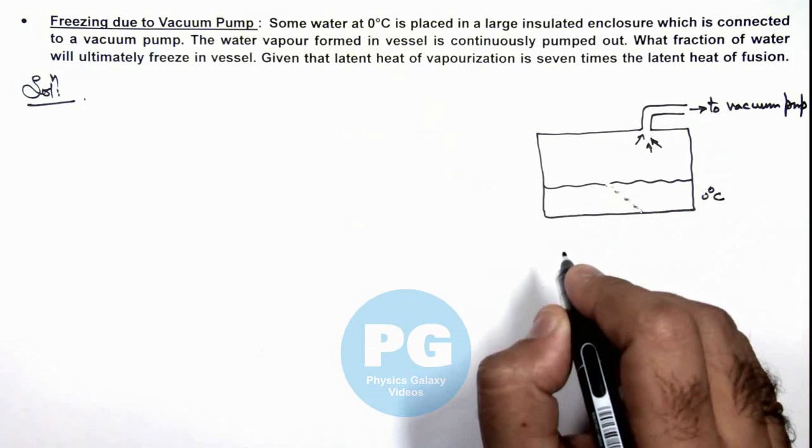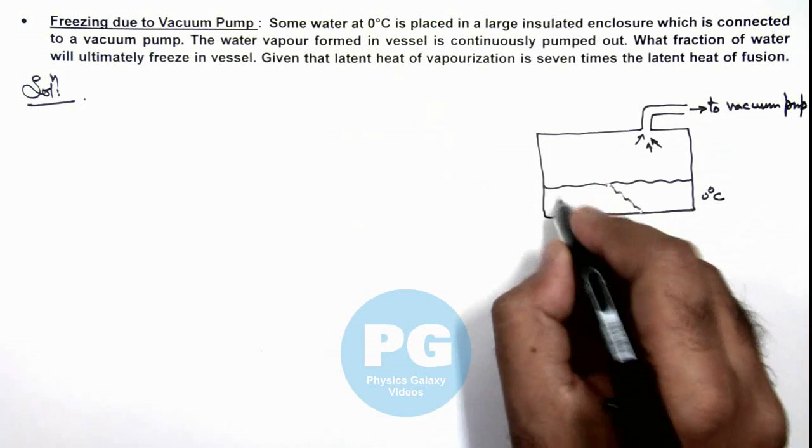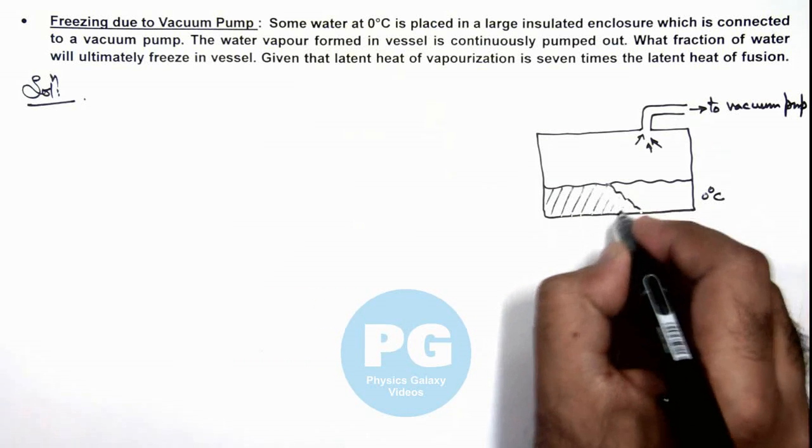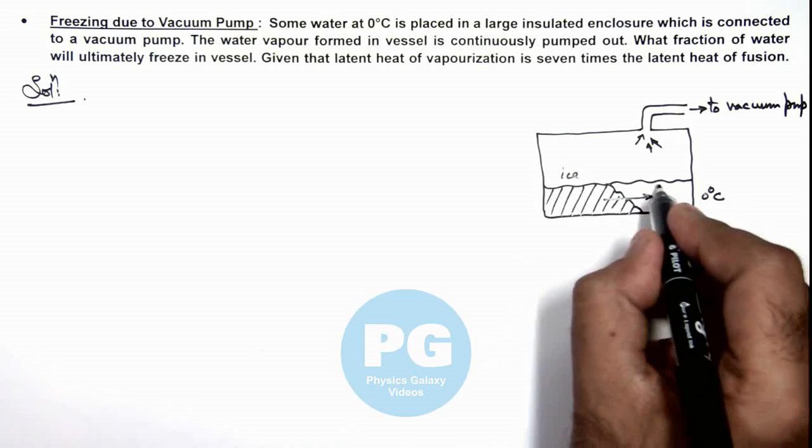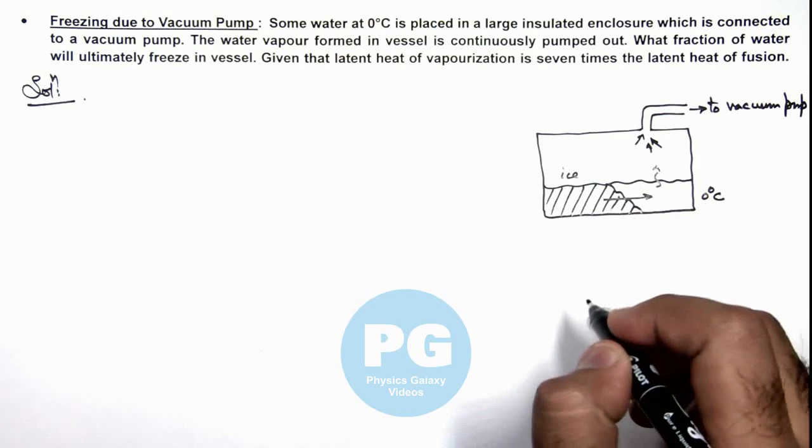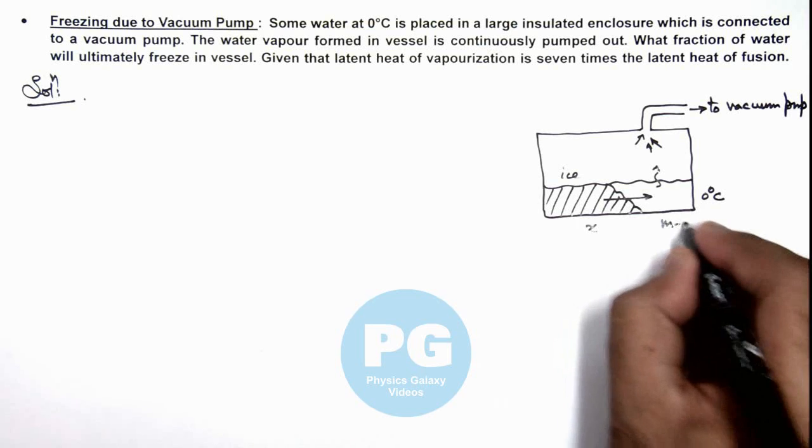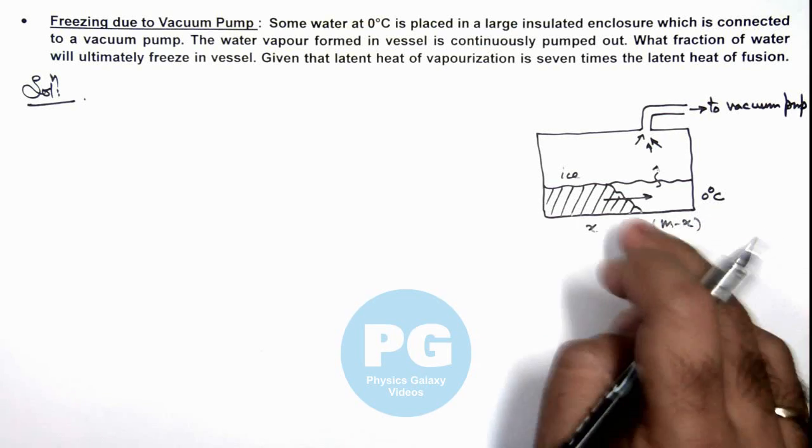So here we can consider if x mass of water will freeze, and this is the ice formed due to the supply of heat for the amount of water which is being vaporized. Then m minus x mass can be considered to be vaporized.